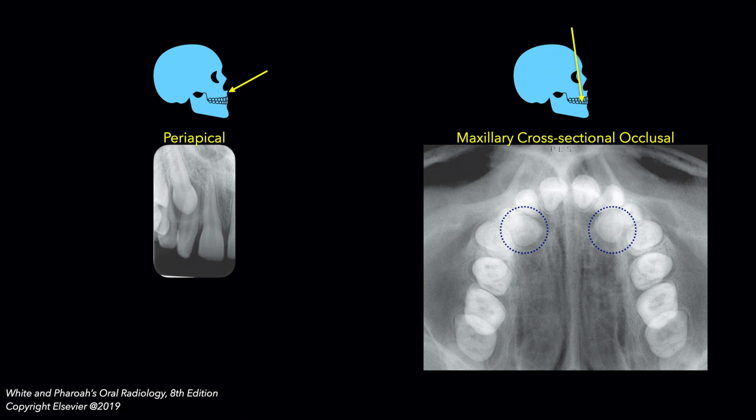However, making maxillary cross-sectional occlusal radiographs is not straightforward due to the superimposition of the cranial structures over the region of interest. Thus, the approach of using a combination of a periapical and an occlusal radiograph for localization is best suited for the mandible.